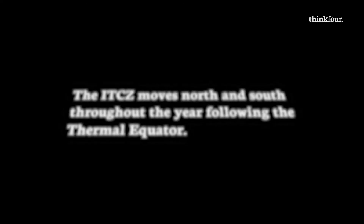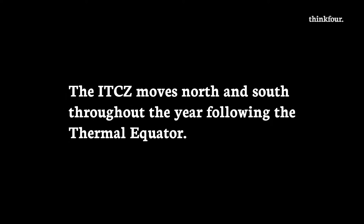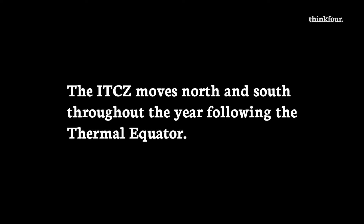This next part is key. The ITCZ moves north and south throughout the year, following the thermal equator. This is the movement of the Sun in relation to the Earth's surface. It alters where the most heat is received and where convection takes place. The rainfall produced controls the wet and dry seasons in West Africa.